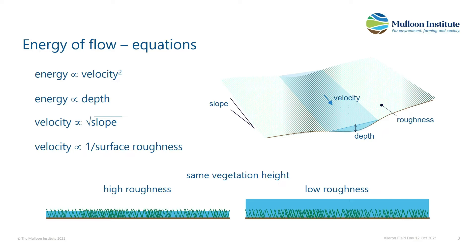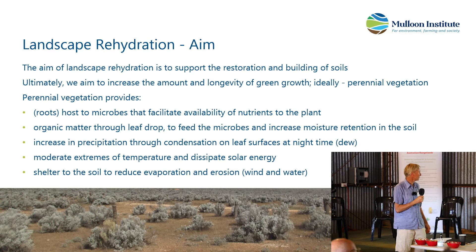The surface roughness can vary depending on the depth of flow. So if you've got a low flow, which is the height of vegetation, that's actually equivalent to high roughness. But if you have a very big flow over that same vegetation, it's actually a low roughness. And we can actually work with that by changing the width of flow and reducing the depth.